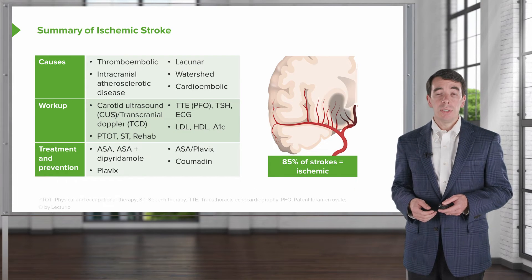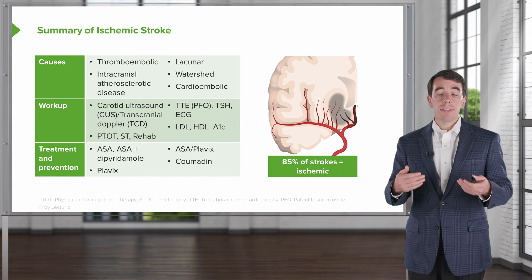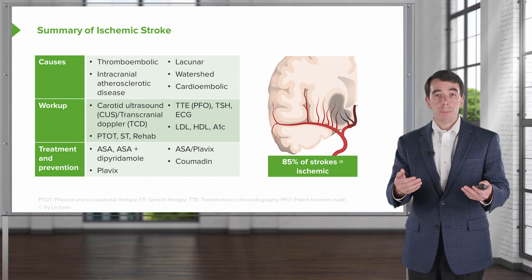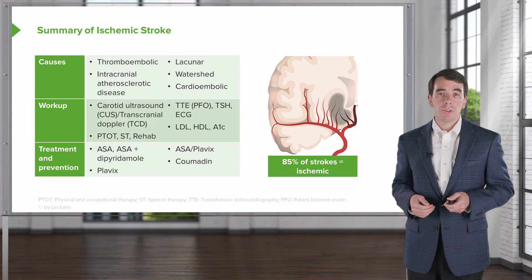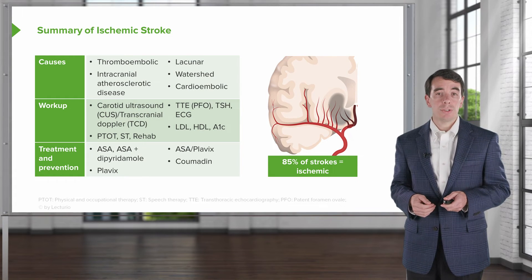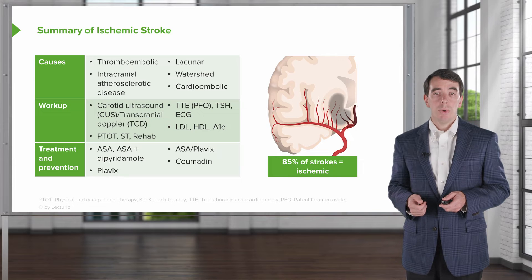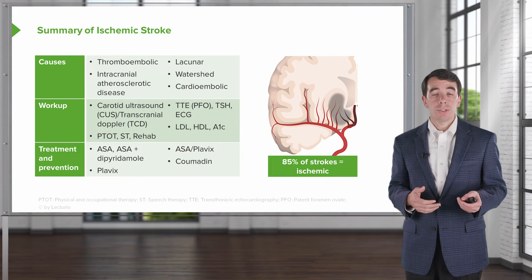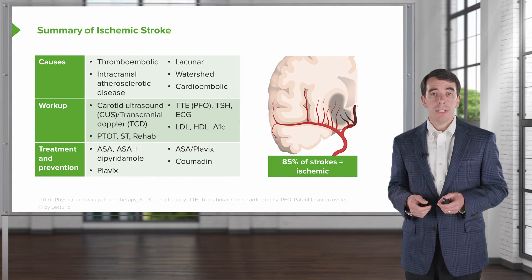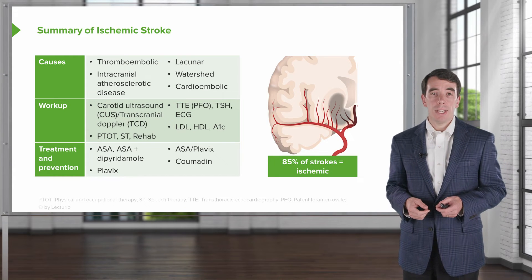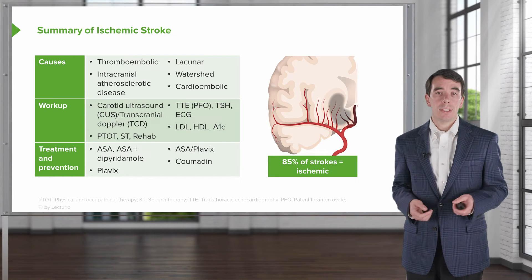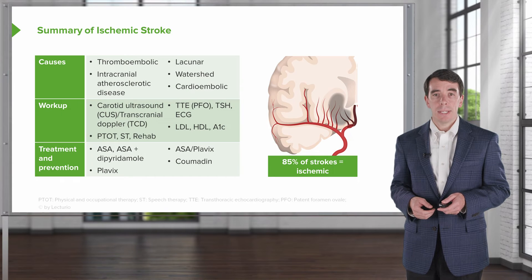Treatment is critical — we want to prevent the next stroke. Primary prevention prevents a stroke before it occurs; secondary prevention prevents the next stroke after one has already happened. We think about antiplatelet agents like aspirin, Plavix, and Aggrenox, as well as anticoagulation with Coumadin, Lovenox, and direct oral anticoagulant or antithrombotic medications.